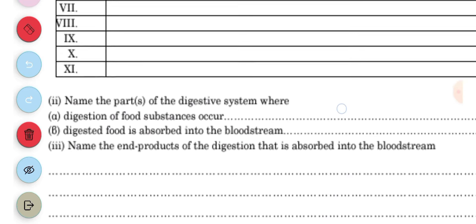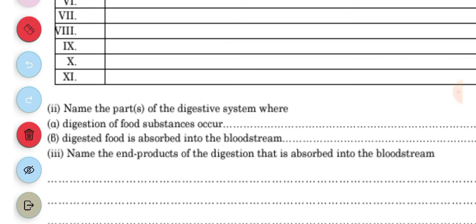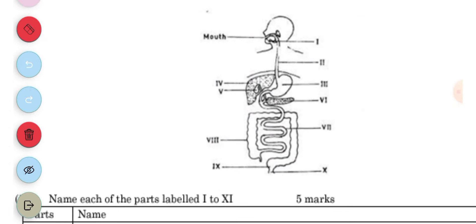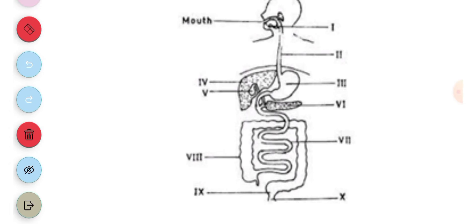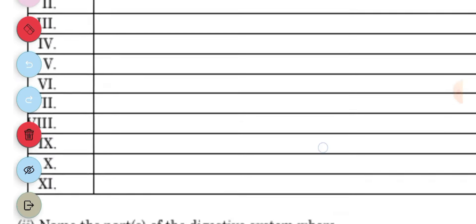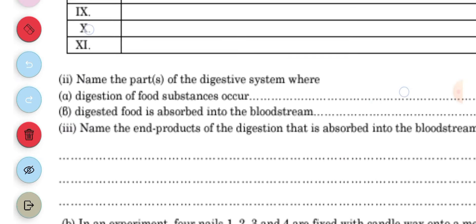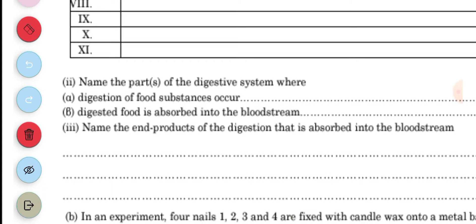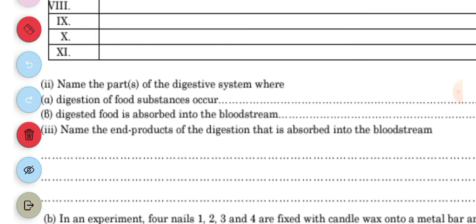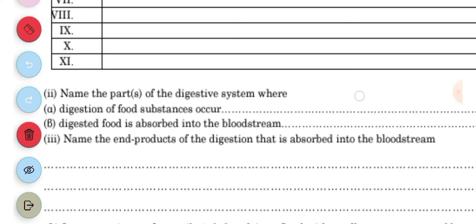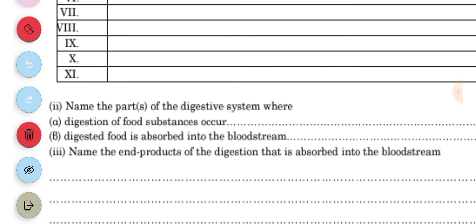Part III is where digested food is absorbed into the bloodstream. The digested food is absorbed into the bloodstream in the small intestine, which is the ileum. Part IV, name the end products of digestion that are absorbed in the bloodstream. The end products absorbed include amino acid, fatty acid and glycerol, and glucose.